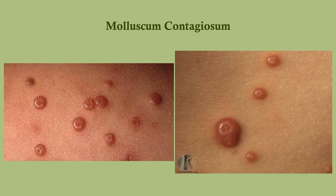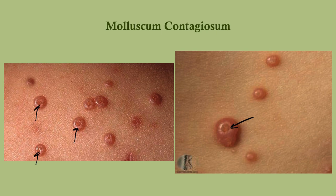This is what it looks like — you can't mistake it. Note that little umbilication. These are very common and happen in kids. Technically it is an STI, but you can get it in a variety of ways — it does not have to be sexually transmitted.